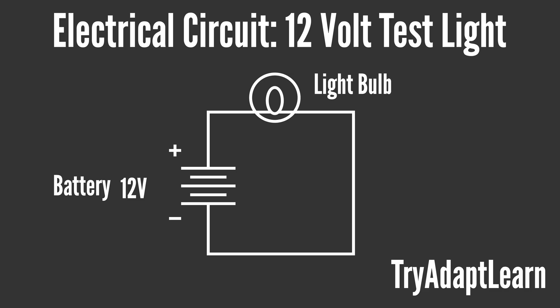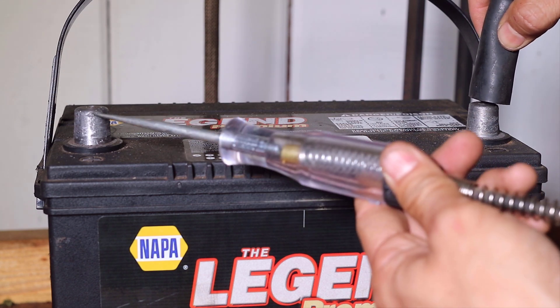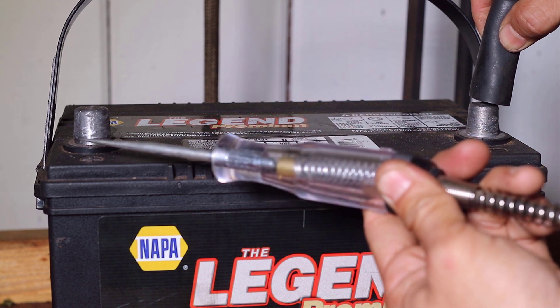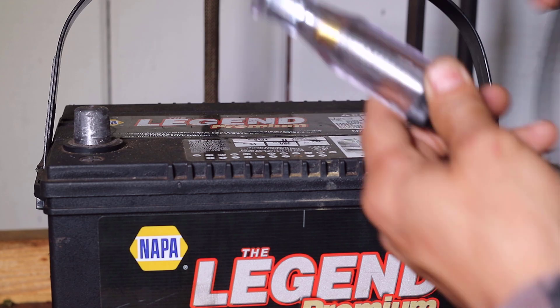Now let's try to reinforce our understanding of Ohm's Law with a few tests. As seen, this electrical diagram represents a simple circuit which includes a 12 volt automotive battery and a 12 volt test light. On the workbench we can use this simple electrical circuit as a basis for testing Ohm's Law. When the clip is connected to the negative terminal and the test lead is connected to the positive terminal, this creates a closed circuit and the light bulb is illuminated.